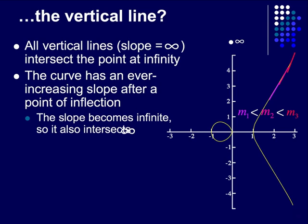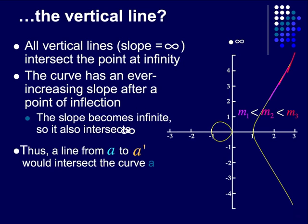So, as the slope of the curve becomes infinite, it behaves more like a vertical line, so it also intersects infinity. Thus, a line from point a to a prime would intersect the curve at infinity.